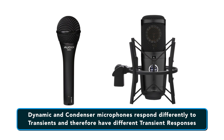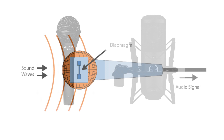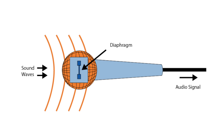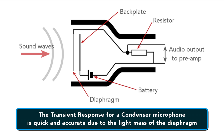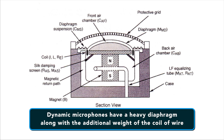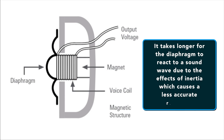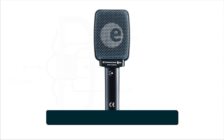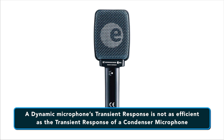Dynamic and condenser microphones respond differently to transients and therefore have different transient responses. For any microphone to convert sound into electrical energy, the sound must move through the mic's internal diaphragm. The transient response of a condenser microphone is quick and accurate due to the light mass of the diaphragm. In contrast, dynamic microphones have a heavy diaphragm along with the additional weight of the coil of wire, so it takes longer for the diaphragm to react to sound waves due to the effects of inertia, causing a less accurate recording. Generally, a dynamic microphone's transient response is not as efficient as that of a condenser microphone.